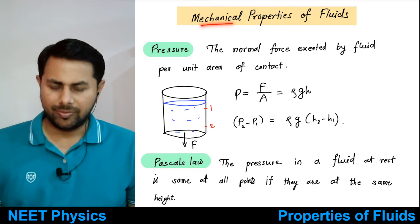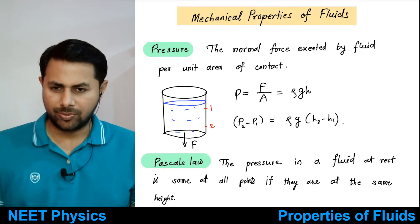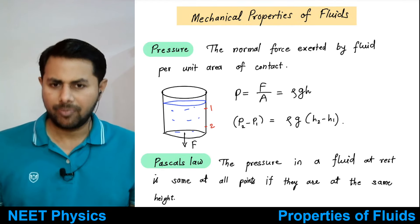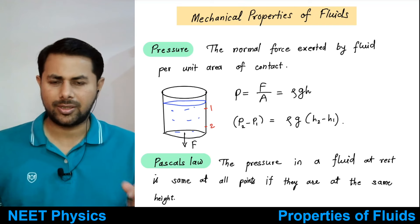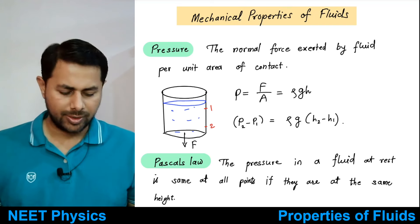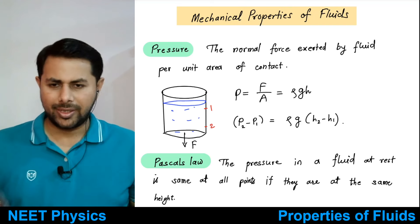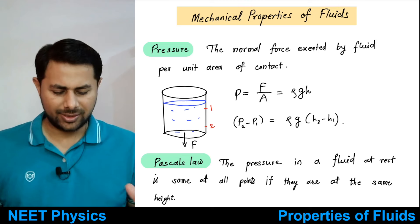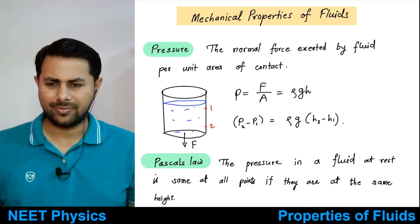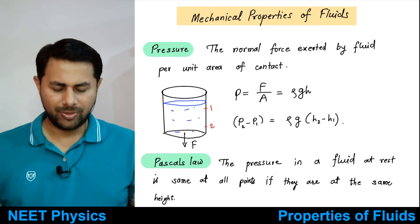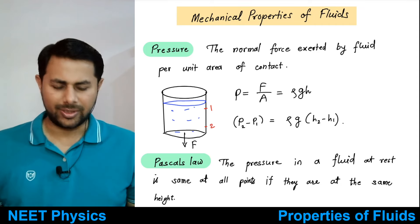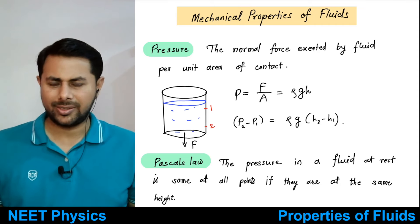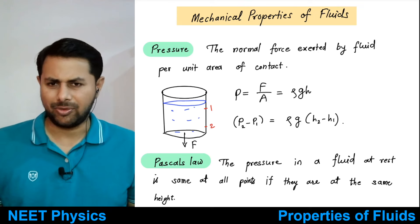Let us begin with the mechanical properties of fluids. What are fluids? Fluids means the materials that can flow — substances that can flow. Anything that can flow is a fluid. Solids are not fluids. Liquids and gases, they are fluids.